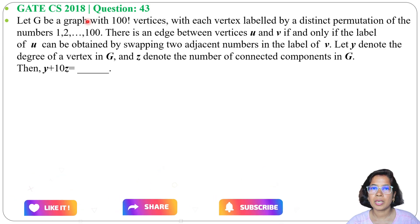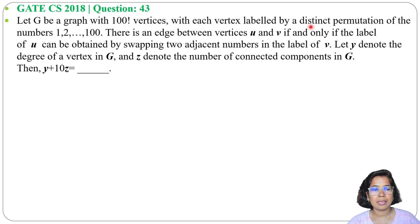Let's solve one previous question of graph theory. This question was asked in GATE CS 2018, Question number 43. Let G be a graph with 100 factorial vertices, with each vertex labeled by a distinct permutation of the numbers 1, 2, till 100. There is an edge between vertices u and v if and only if the label of u can be obtained by swapping two adjacent numbers in the label of v.